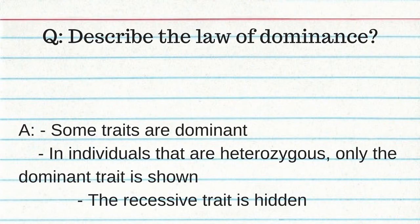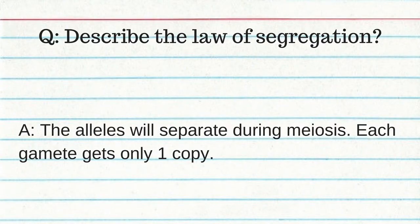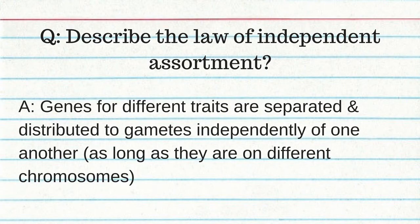Mendel's three laws: law of dominance, law of segregation, and law of independent assortment. The law of dominance: some traits are dominant, and in heterozygous individuals only the dominant trait is shown — the hidden trait is recessive. The law of segregation: the two alleles separate during meiosis and each gamete gets only one copy. The law of independent assortment: genes for different traits are distributed to gametes independently, as long as they are on different chromosomes.